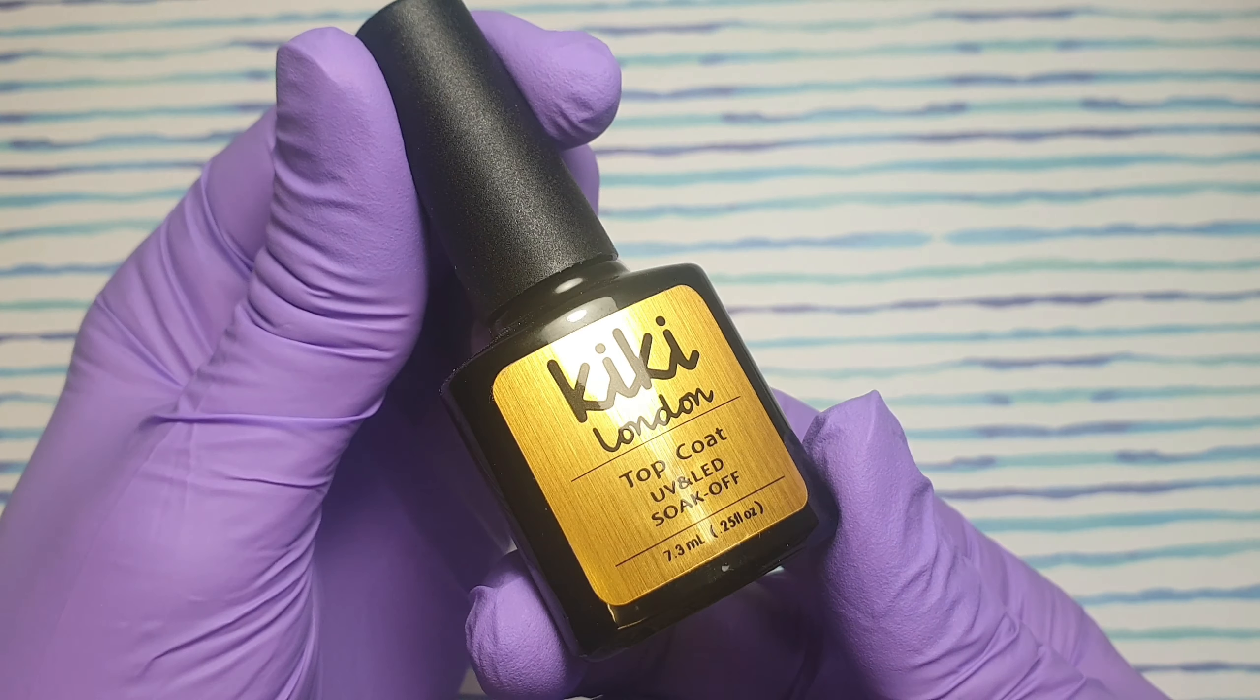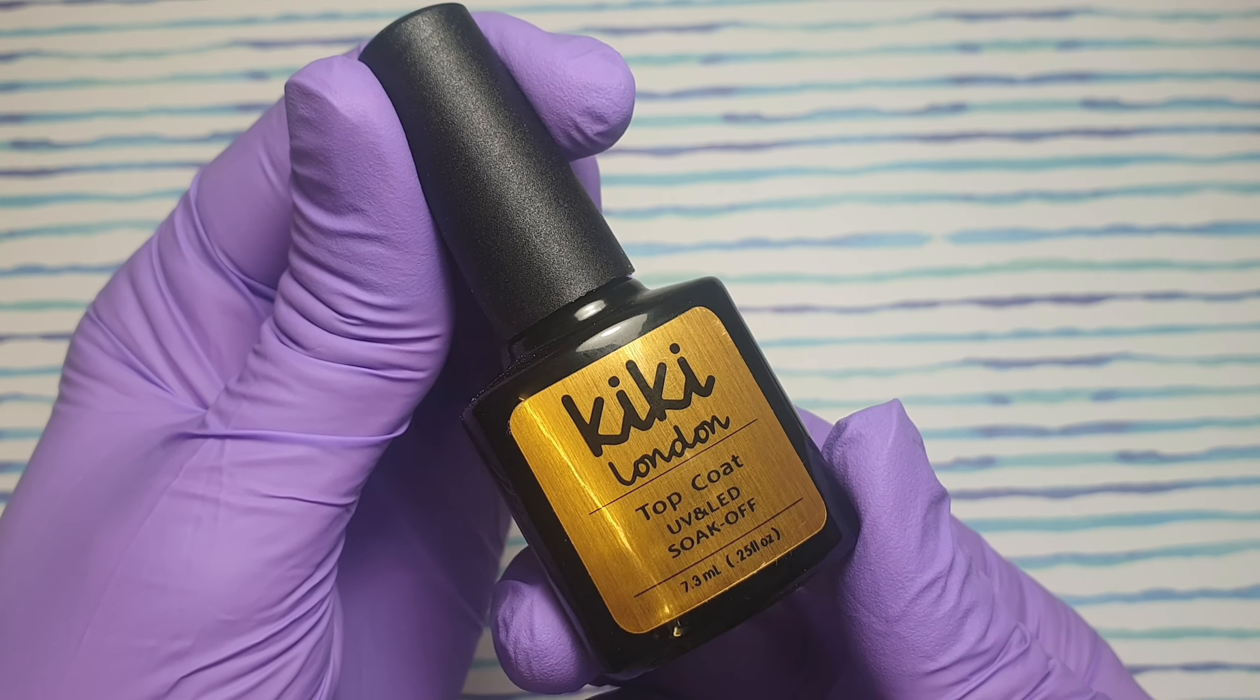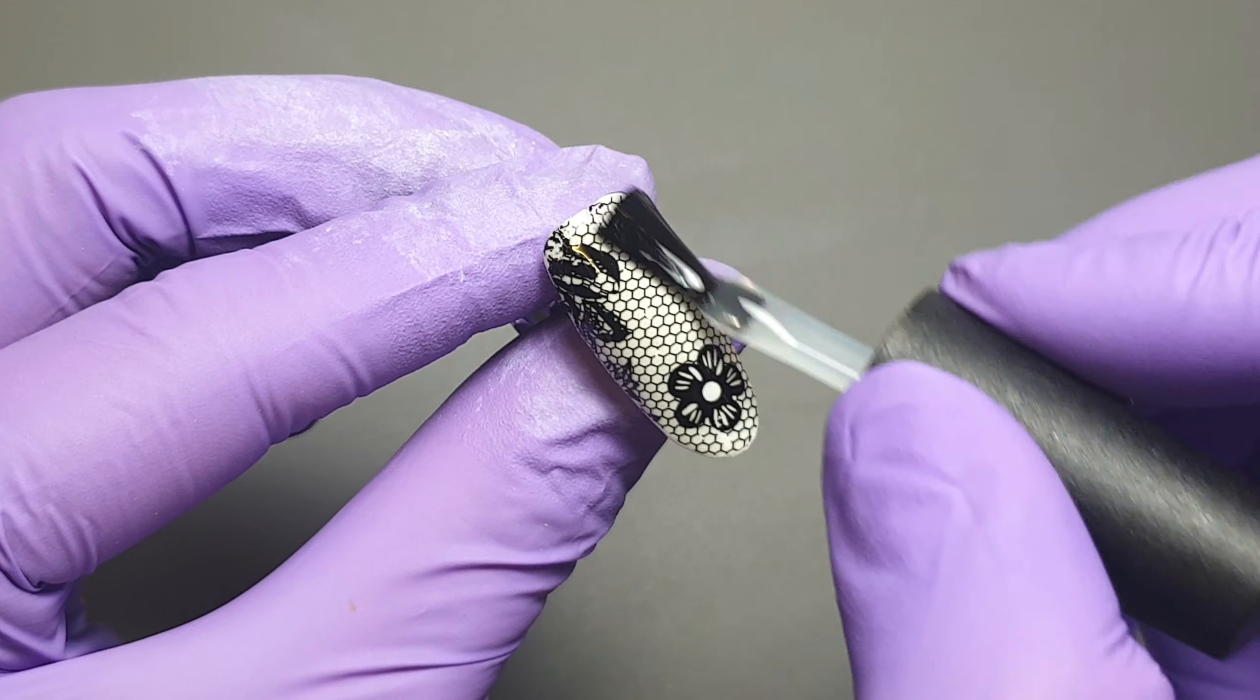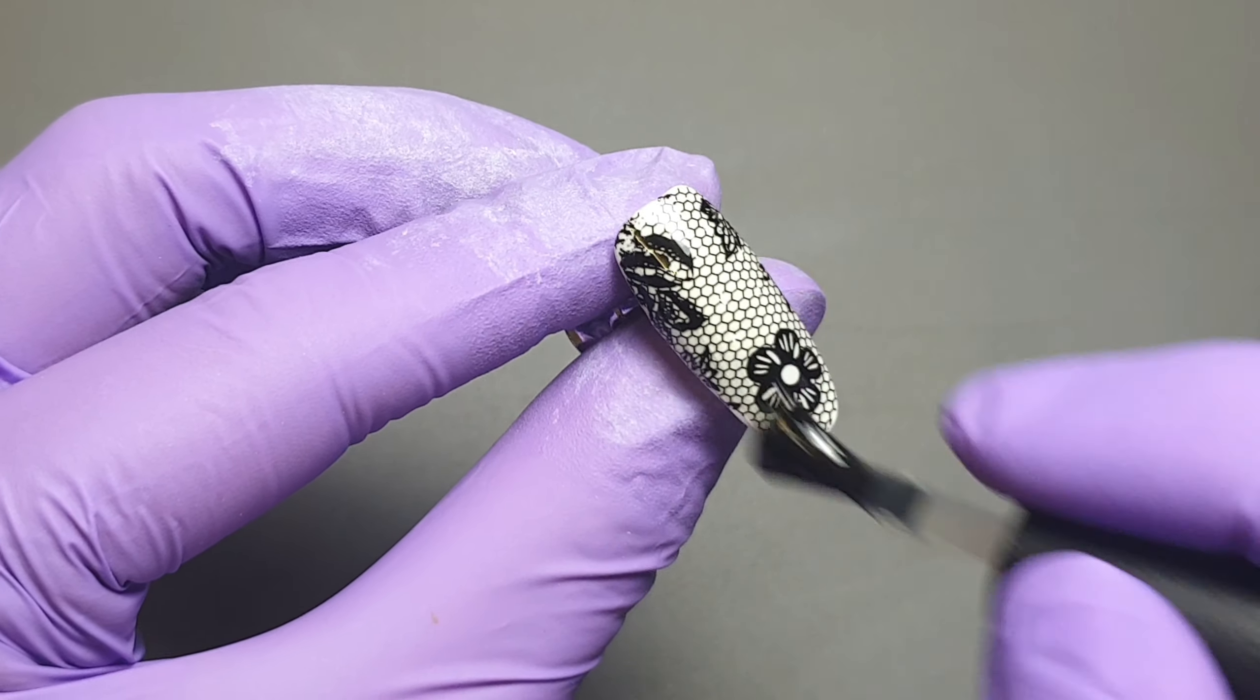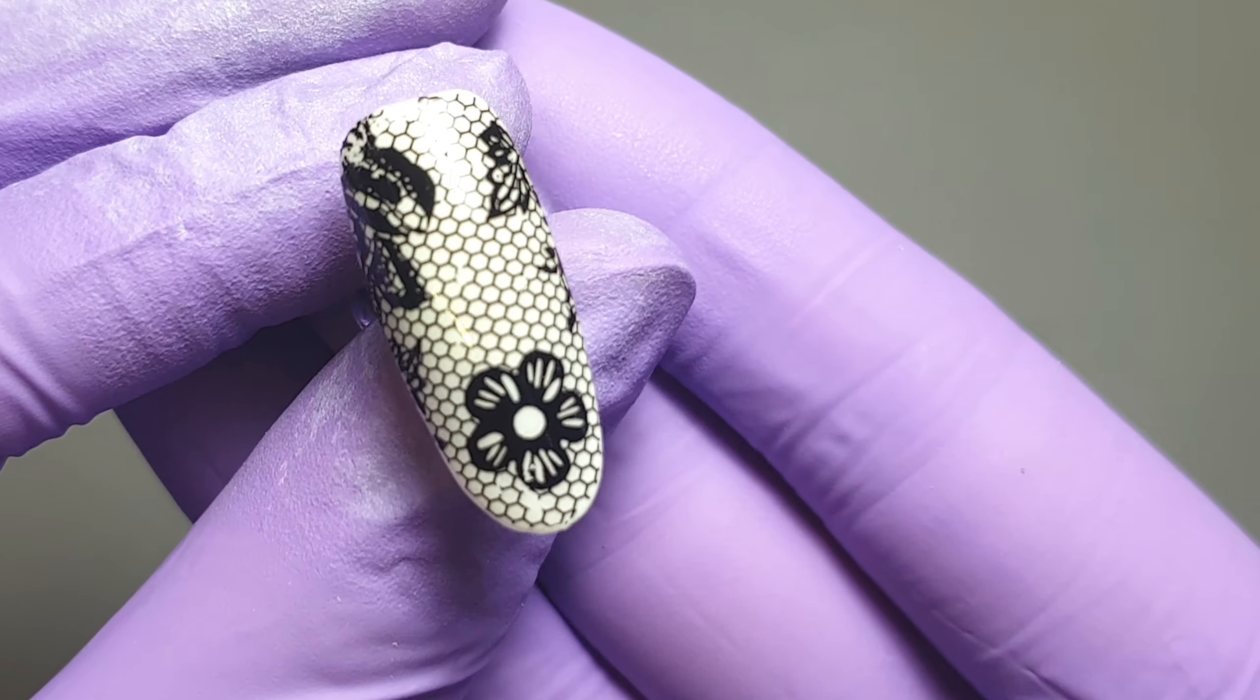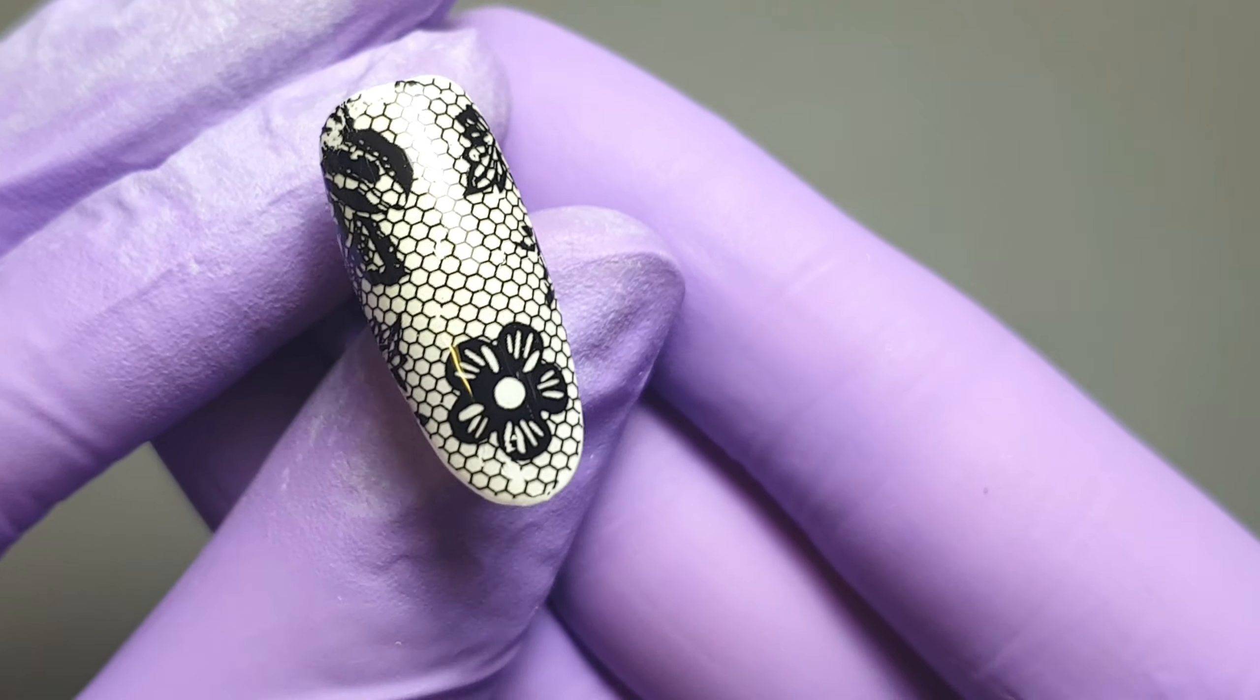I'm then going to come in with my Kiki London Top Coat. Because I'm working on display tips, I just thought I would top coat as I went along. I'm going to apply a nice generous layer of this and then I'll pop it in my LED lamp to cure for 60 seconds. If I'm doing foils on myself, I do tend to double top coat just to make sure I don't get any chipping, so I would do two thin layers, but because I'm working on a tip I've just done the one.